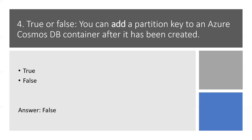Once you create a container, you cannot modify the partition key. You have to set the partition key when you are creating the container. In my previous sessions, there is one video session available about Azure Cosmos Database where I created a database and containers. You can see how we can set up RUs, how we can modify RUs, and how we can define a partition key. You can check that session — it's a good session about Azure Cosmos Database.